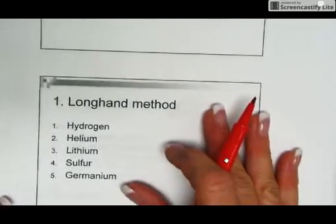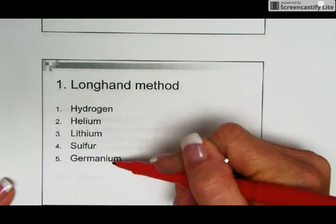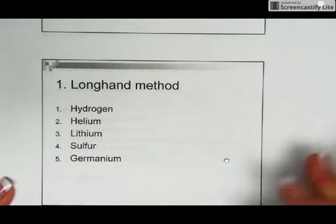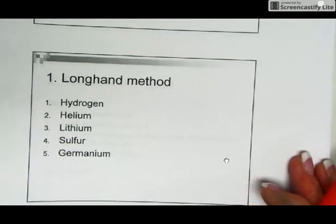I'm going to be doing the ones in our notes: hydrogen, helium, lithium, sulfur, and germanium for the examples. And so I'm going to switch over and show you a periodic table and remind you of a couple of things that we've talked about.